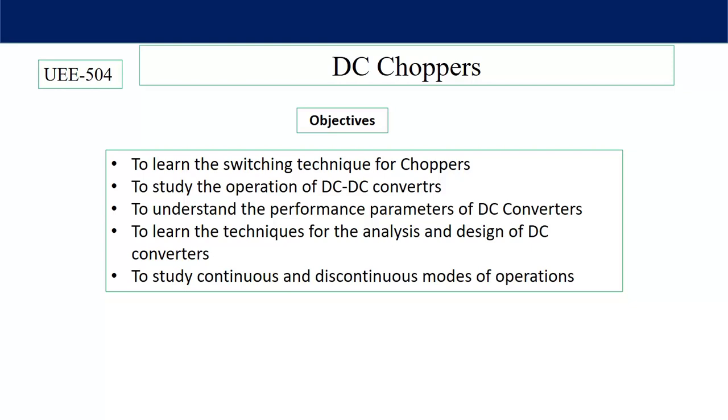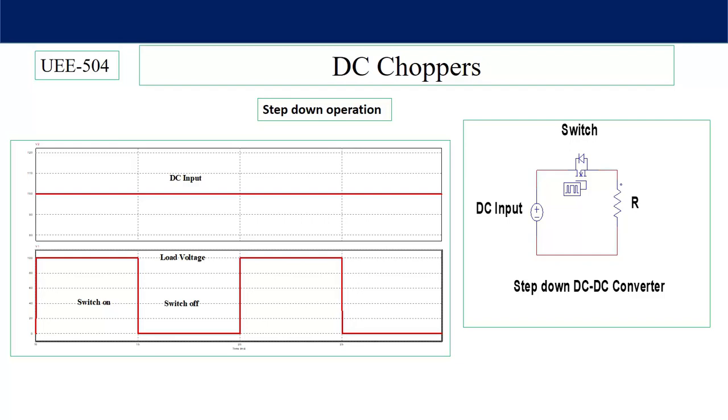And to study continuous and discontinuous modes of operations. Continuous conduction mode means continuously we will get current across the load. Discontinuous means for some duration of time current is zero. Let's start with simple DC choppers. The DC chopper can convert fixed DC voltage to output voltage more than input voltage or less than input voltage. Here I am considering a simple step down chopper.